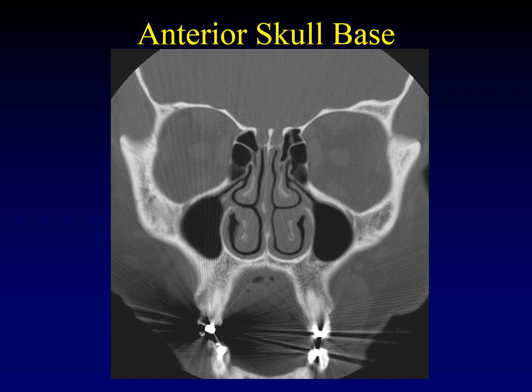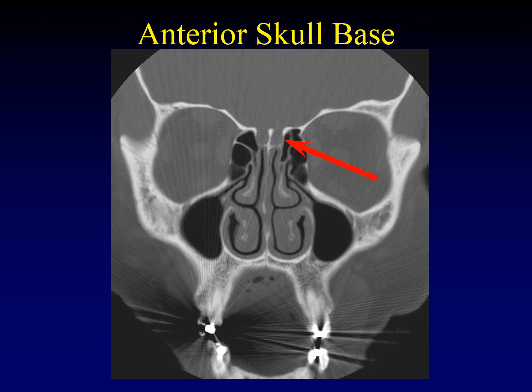When talking about the anterior skull base, we're essentially talking about the olfactory apparatus and its surrounding bones. The cribriform plate is where the first cranial nerve — the olfactory nerve — sends little projections down into the nasal cavity that enable us to smell. It is a horizontally oriented bone forming the medial aspect of the roof of the nasal cavity. Parallel to the cribriform plate is the fovea ethmoidalis, or the roof of the ethmoid air cells. This bone continues posteriorly to become continuous with the planum sphenoidale, behind the ethmoid air cells into the roof of the sphenoid sinuses. The vertical piece of bone connecting the cribriform plate to the fovea ethmoidalis is called the lateral lamella of the cribriform plate.